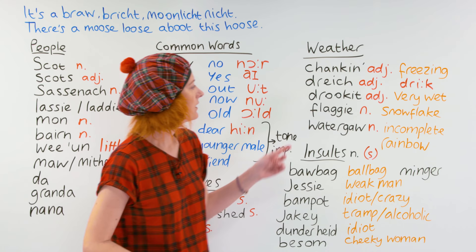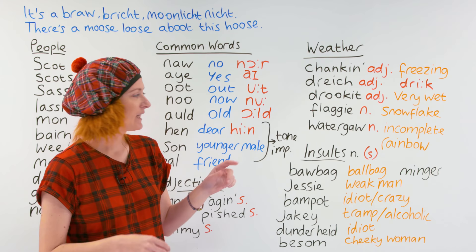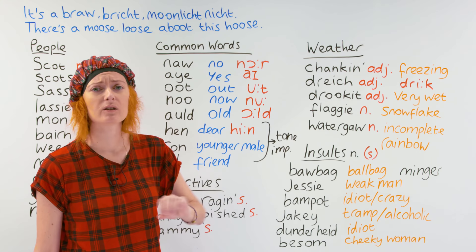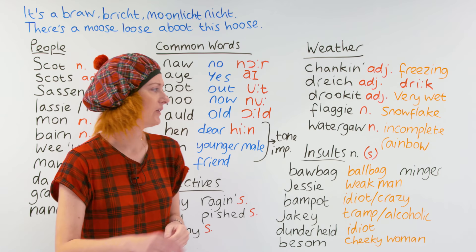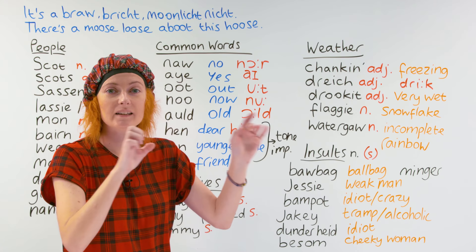Dreich means very wet — similar meaning there. Flakie means snowflake — 'a wee flakie.' And the most bonnie Scottish word of them all is water gore, which means an incomplete rainbow. This could be when the weather keeps stopping and starting raining and there's just one small patch of rainbow there to see.